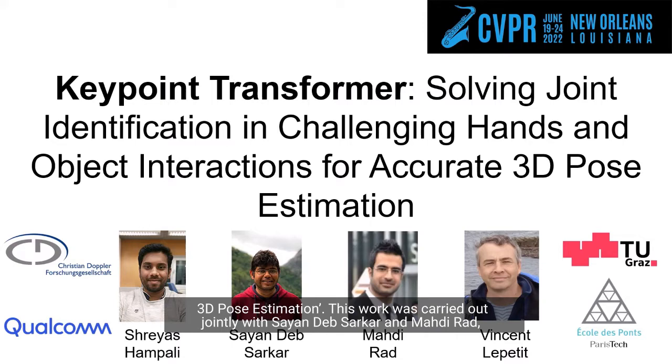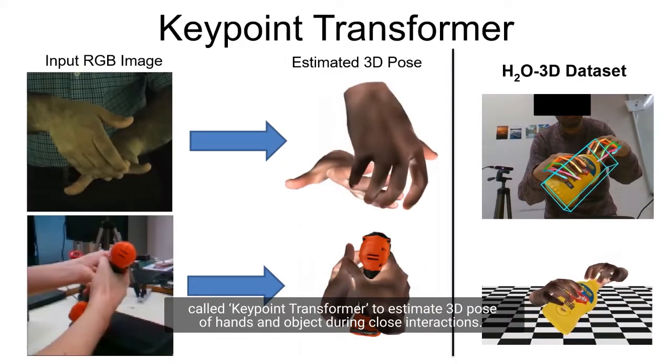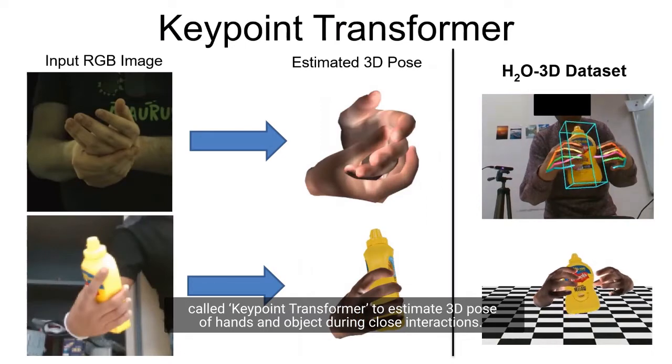This work was carried out jointly with Sayandip, Sakar and Madirat and was supervised by Vincent Lepetit. We designed an efficient architecture called Keypoint Transformer to estimate the 3D pose of hands and object during close interactions.